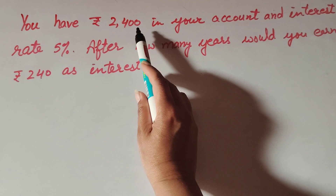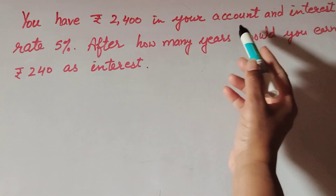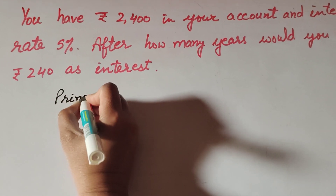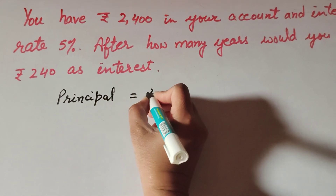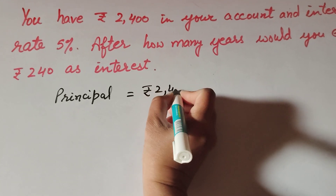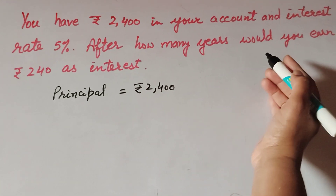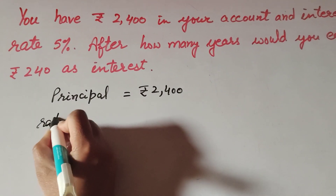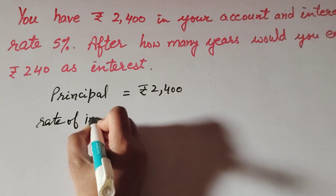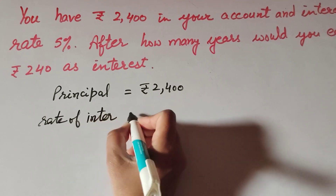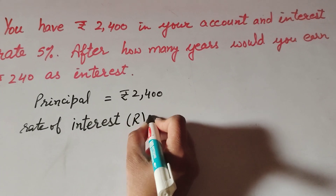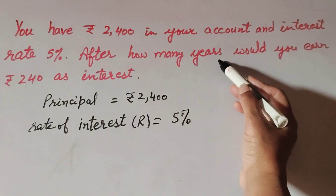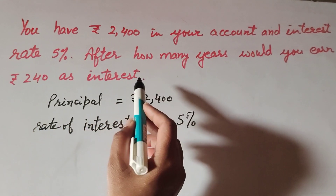The given information is: the amount in your account, rupees 2400, and it is the principal. Principal P is equal to rupees 2400. Rate of interest R is also given and it is equal to 5 percent.